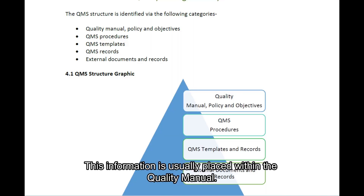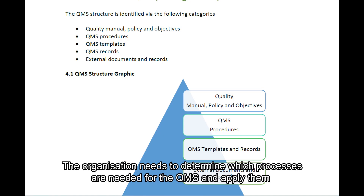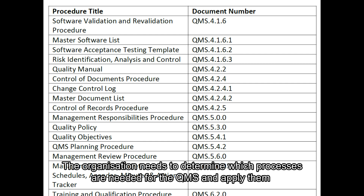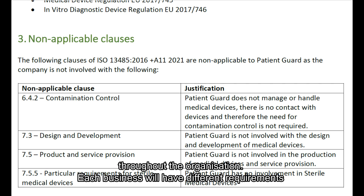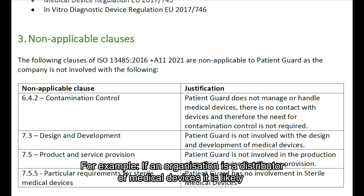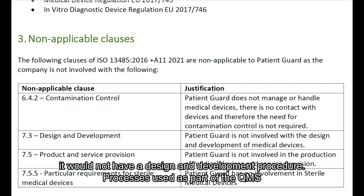The organisation needs to determine which processes are needed for the quality management system and apply them throughout the organisation. Each business will have different requirements. For example, if an organisation is a distributor of medical devices, it is likely it would not have a design and development procedure.